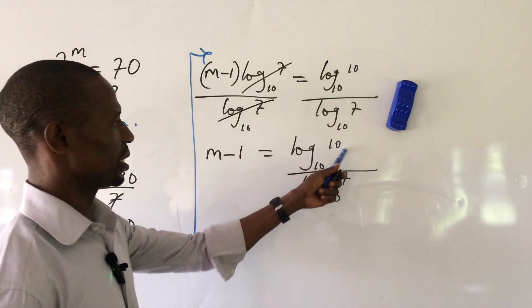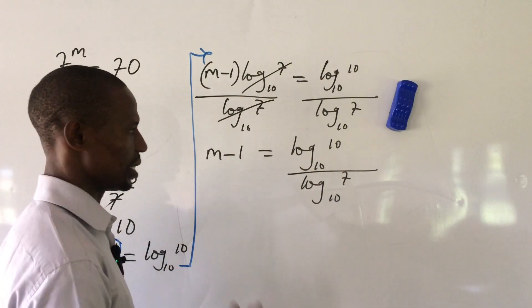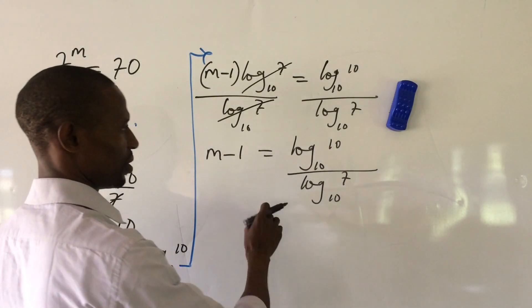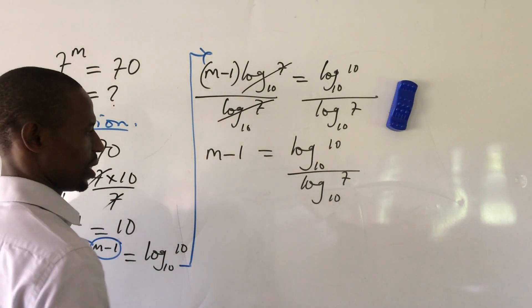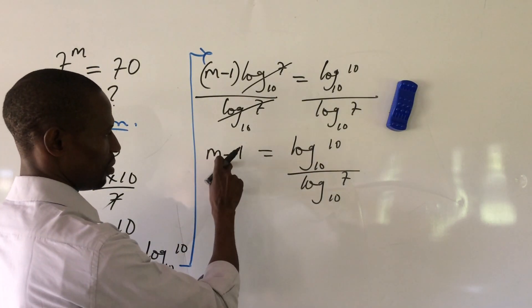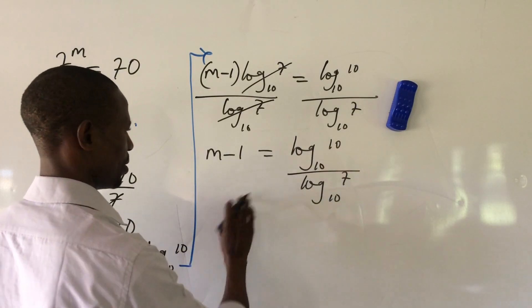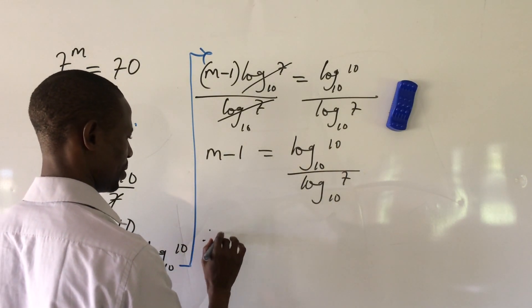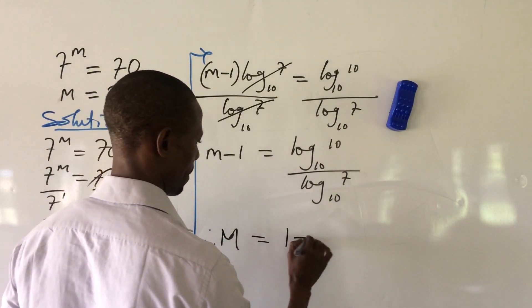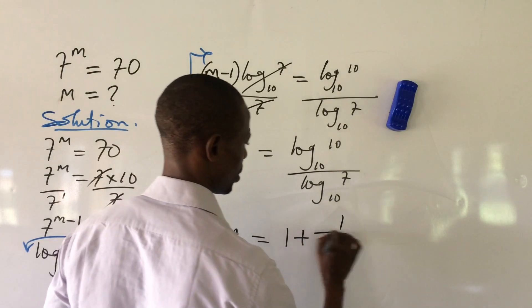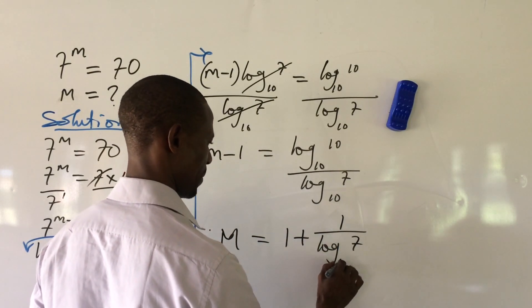Alright, mind you, log 10 base 10 will give us 1 because the log of any number base itself will give us 1. So if we go by that law, then we have the top here to be 1. So we now move this minus 1 to this other side. Therefore, our m equal to 1 plus 1 all over log 7 base 10.